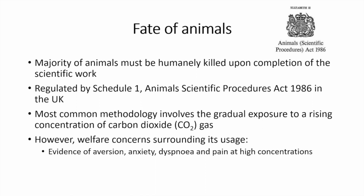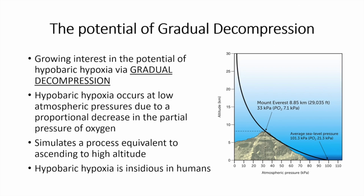The most commonly used method involves the gradual exposure to a rising concentration of carbon dioxide gas. However, despite its common use, there are significant welfare concerns remaining. Evidence has shown that these animals show aversion, anxiety, breathlessness and even pain at higher concentrations. As such, there is an urgent and currently unmet need to find an alternative methodology, also capable of high throughput killing, to provide a humane alternative compared to carbon dioxide. One approach which has received growing interest is the potential of hypobaric hypoxia via a process referred to as gradual decompression.